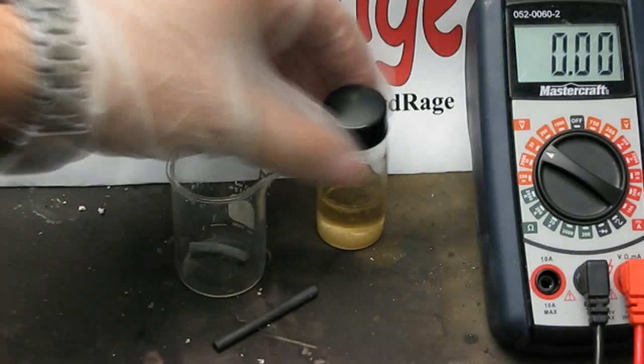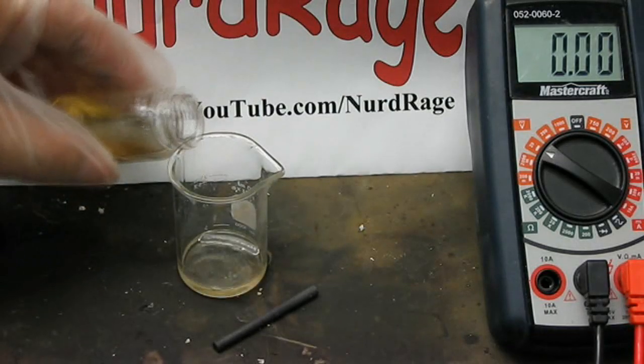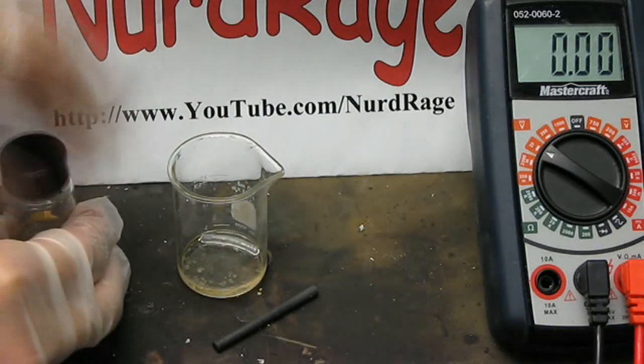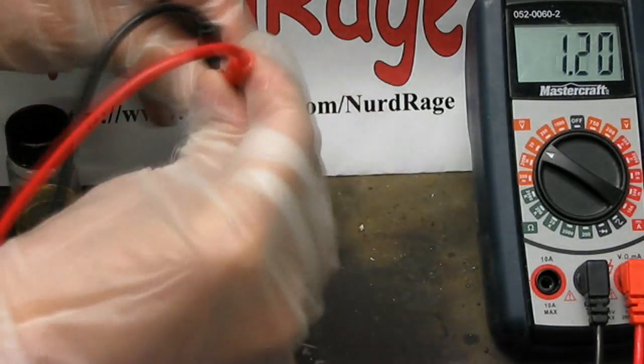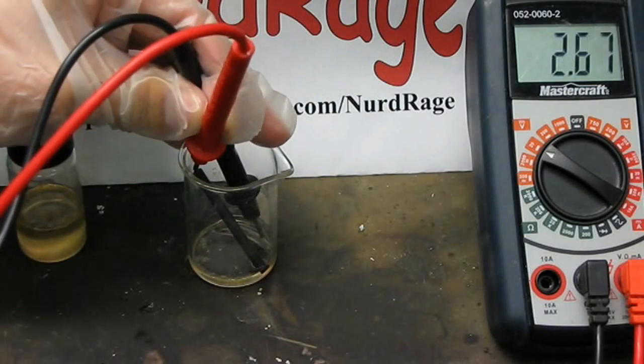Alright, let's first measure the voltage of this battery. The lithium metal is the negative electrode, the theonyl chloride is the electrolyte, and the carbon rod is the positive electrode. We need to give it a few moments to stabilize here.